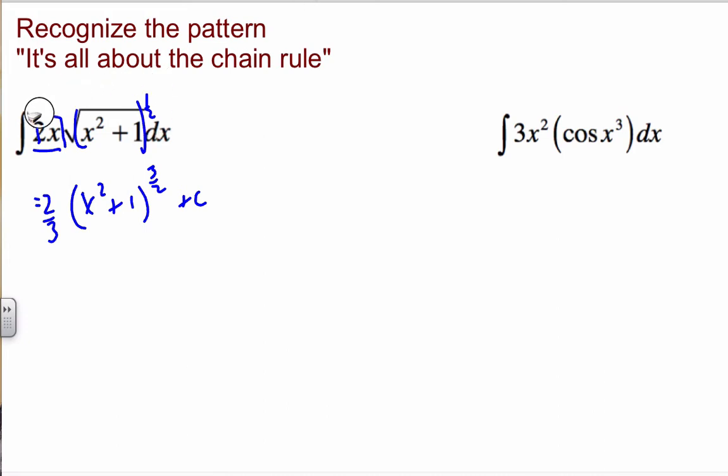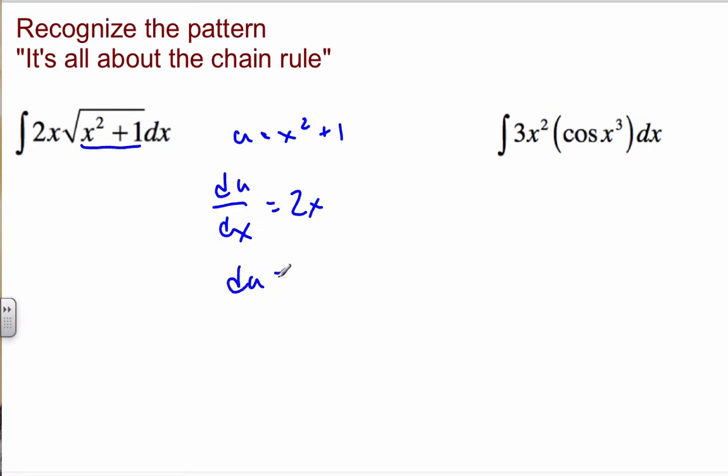If I would show you the process on an easy one that I can do by inspection with a U, this is what I would do. What I would do is I would call the inside function, I would call this inside here, my G is U, which is X squared plus 1. Then I take the derivative of du dx is equal to 2x. Multiply both sides by dx, and du is equal to 2x dx.